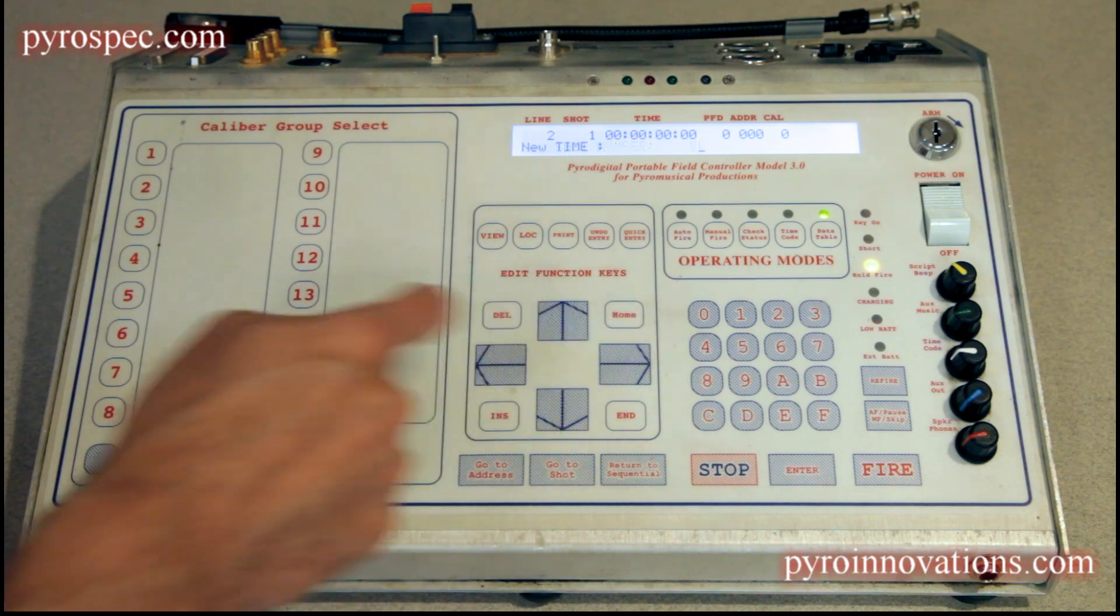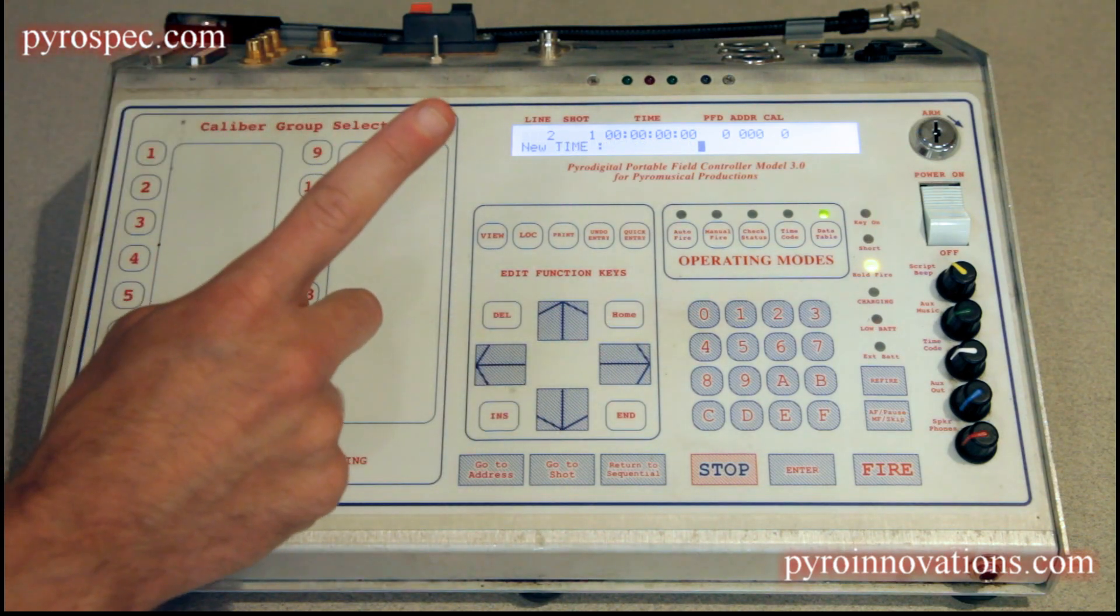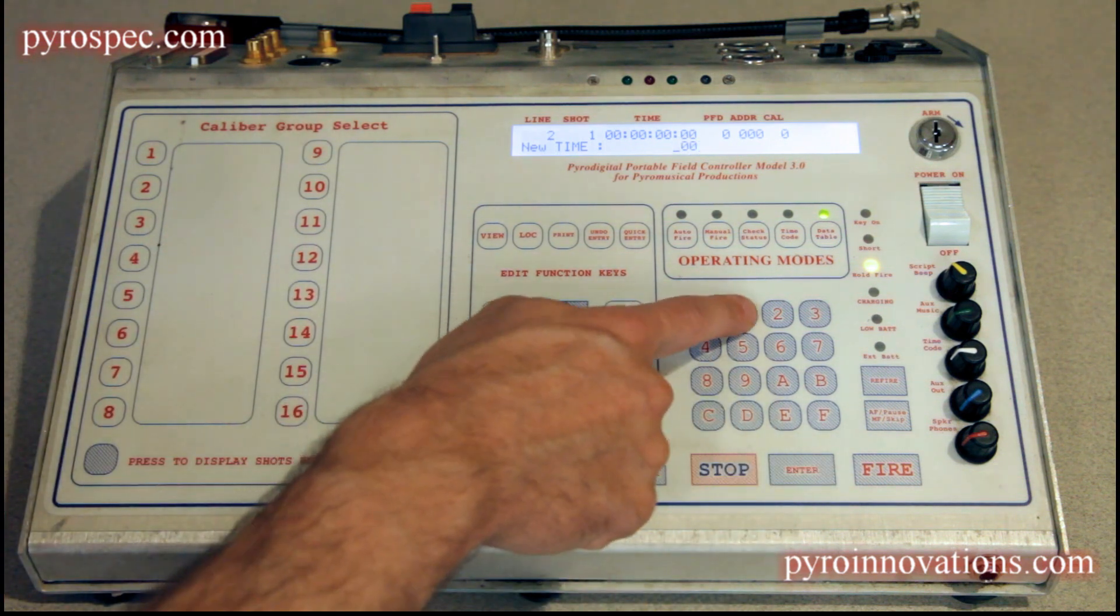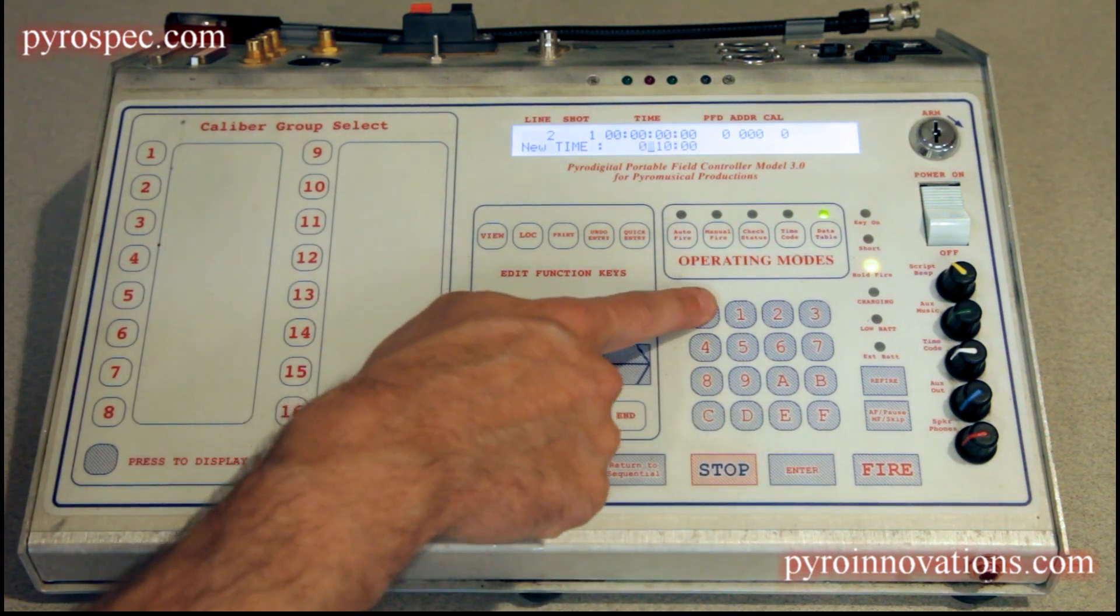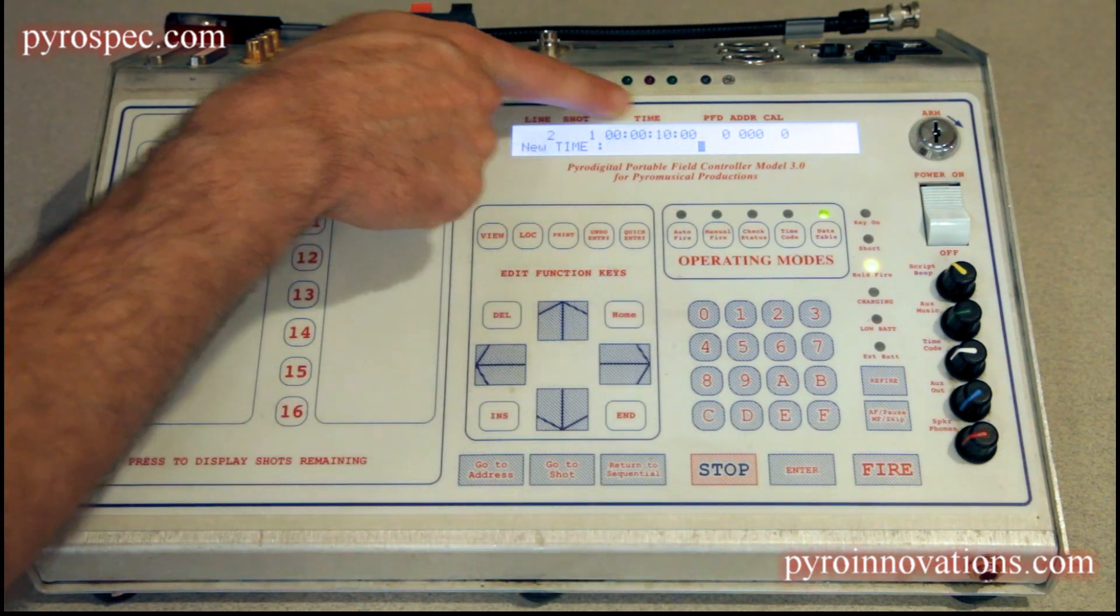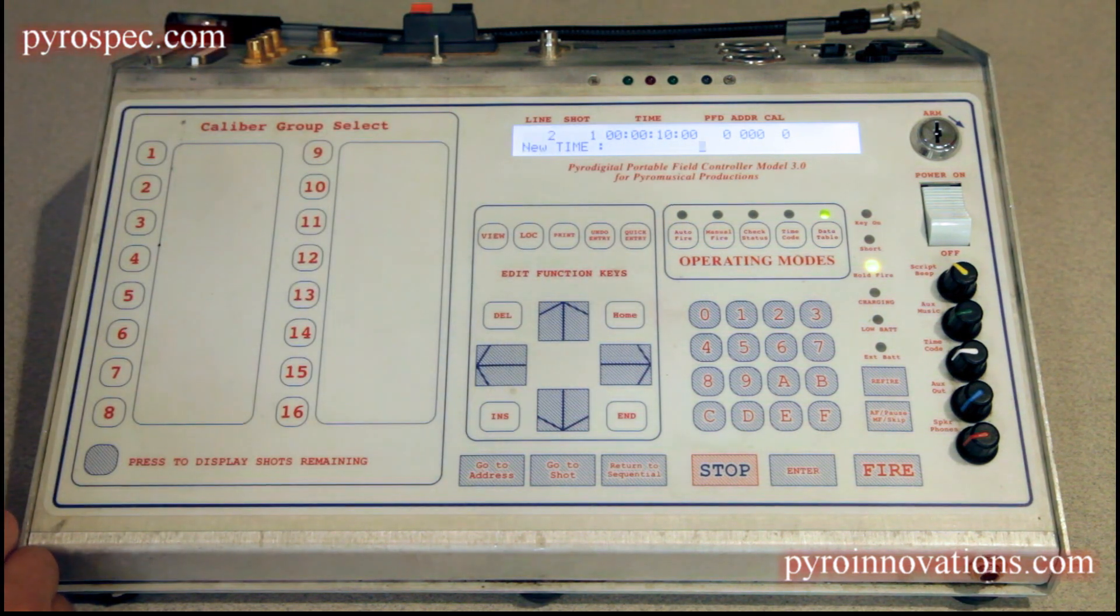We go to the time. We want the same exact time as the previous event line, so it's going to be zero frames, ten seconds, zero minutes, zero hours. You can see that it now has the ten second time identical to the previous event line.